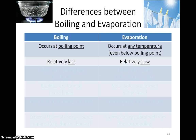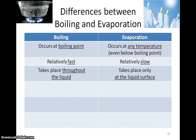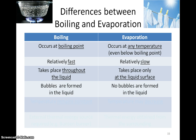Boiling is a relatively faster process than evaporation. Boiling takes place throughout the liquid, but evaporation takes place only at the liquid surface, where the liquid particles with enough energy can escape. Bubbles are formed in the liquid during boiling, but no bubbles are formed during evaporation.